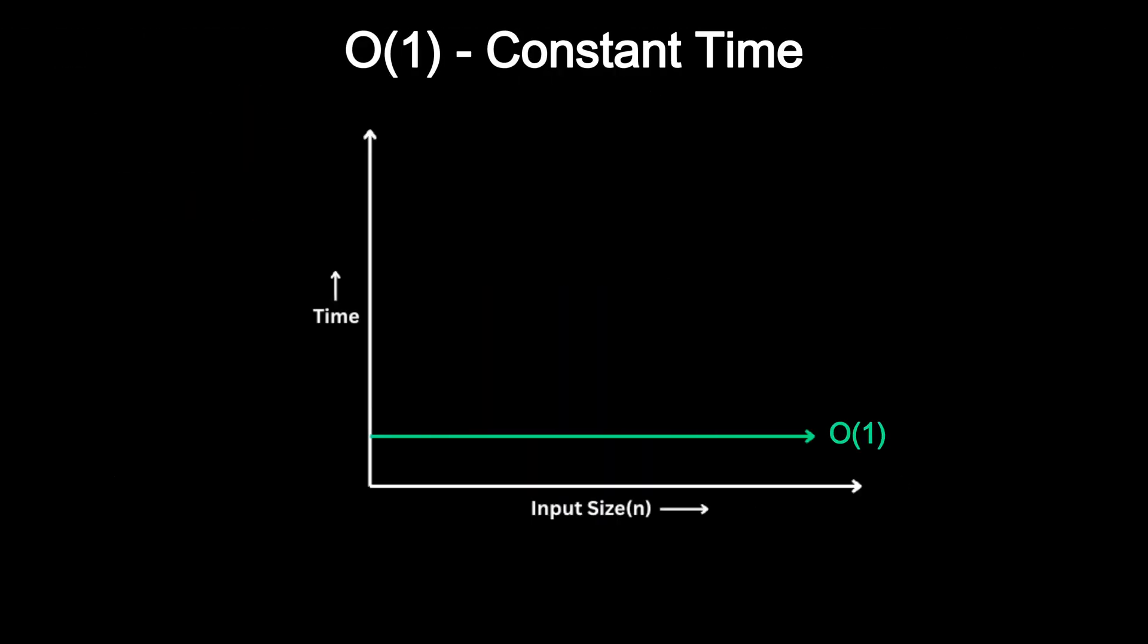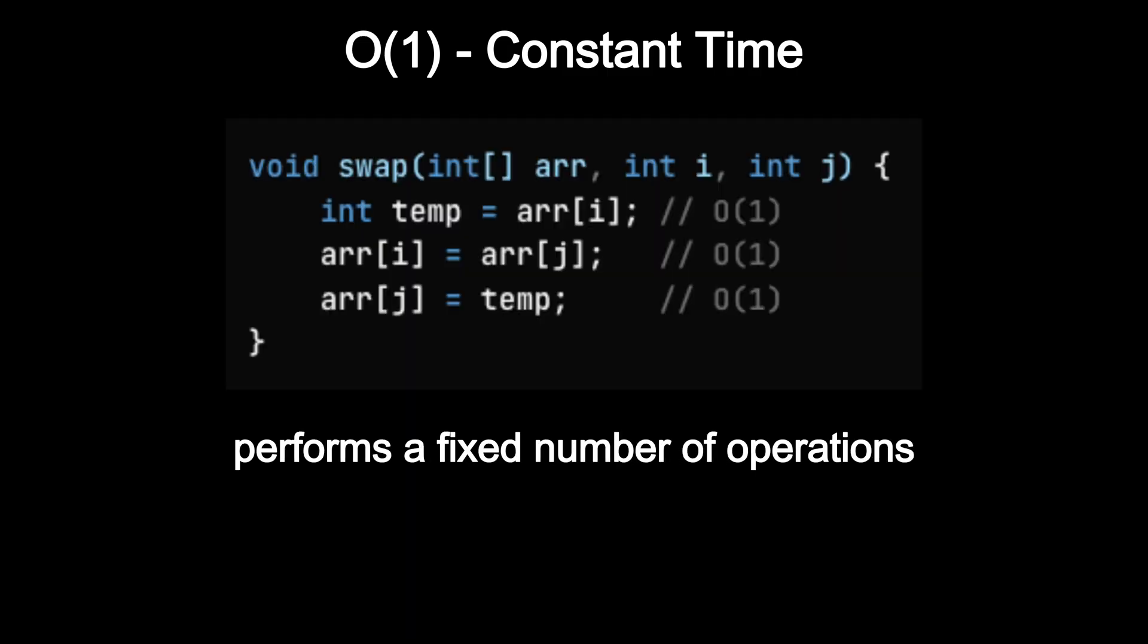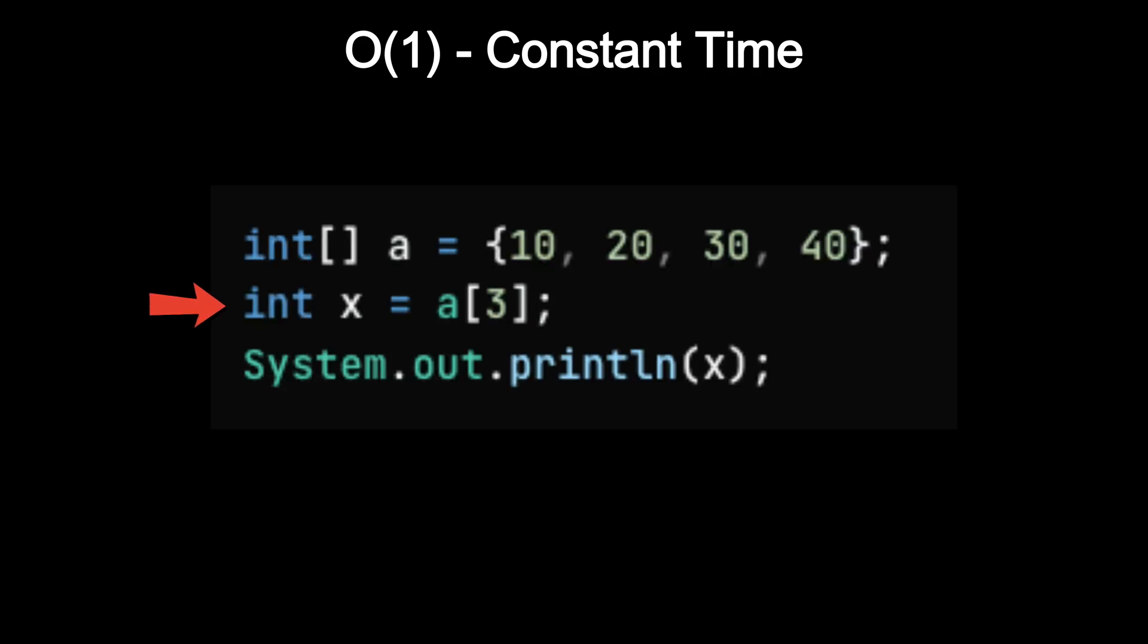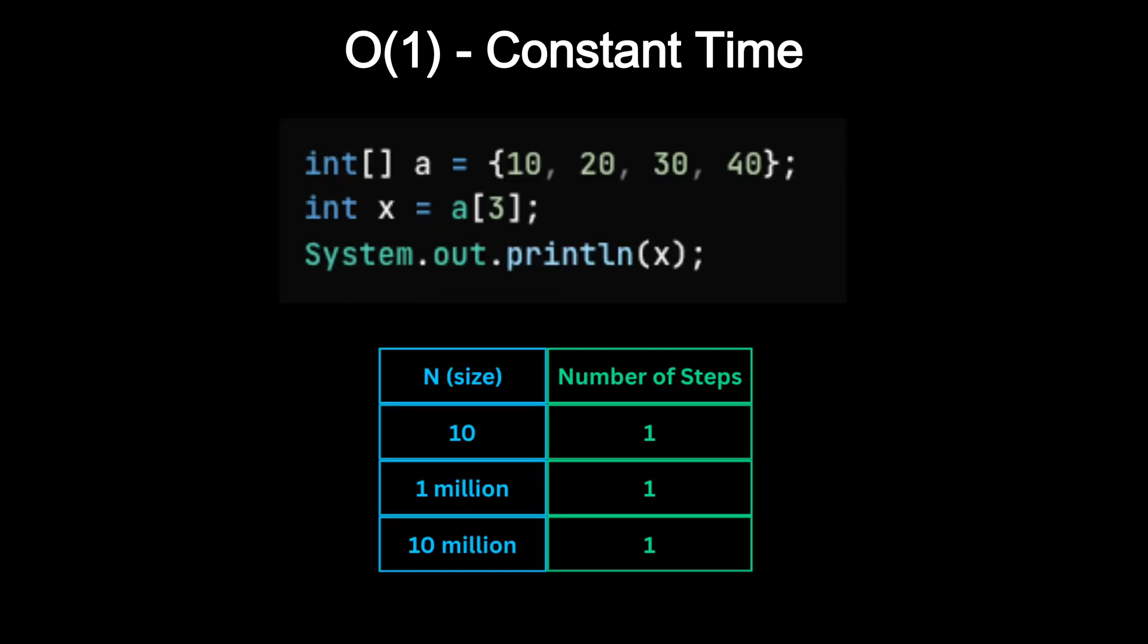Constant time. This is the fastest and most efficient time complexity. An algorithm is O(1) if it performs a fixed number of operations, meaning the execution time does not depend on the size of the input. A classic example is accessing an element in an array by index. It doesn't matter if the array has 10 elements or 10 million, the time it takes to access an element stays exactly the same.